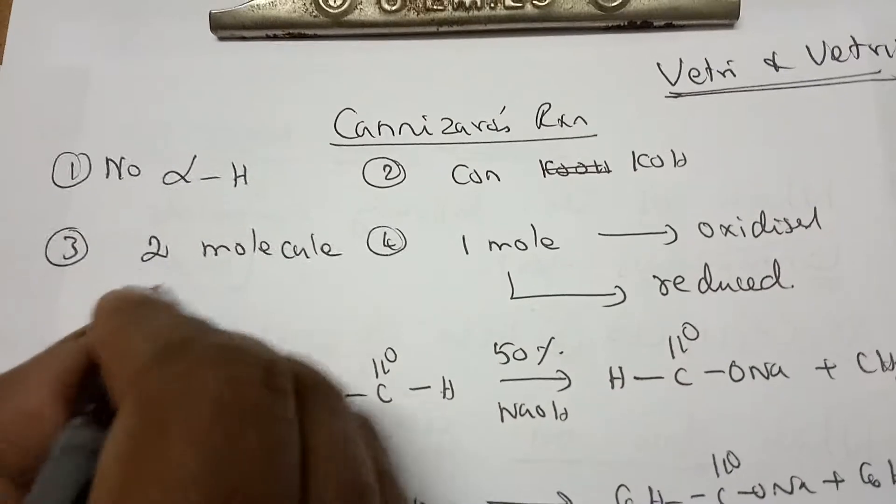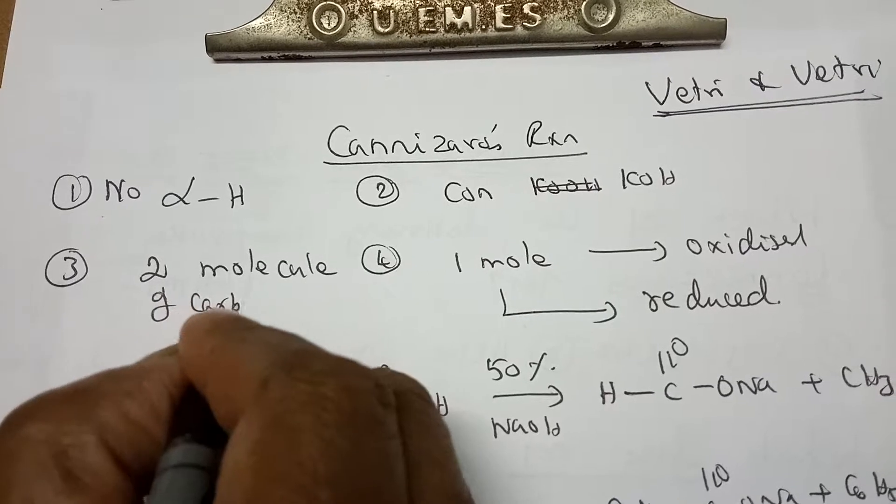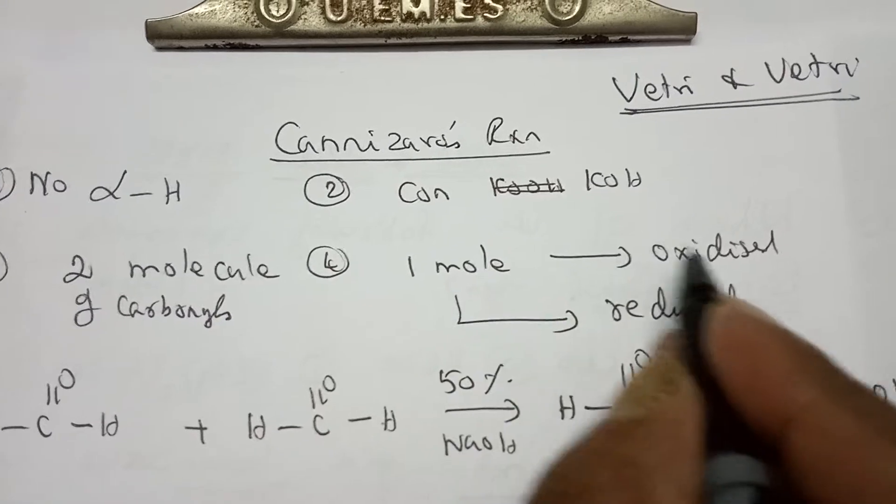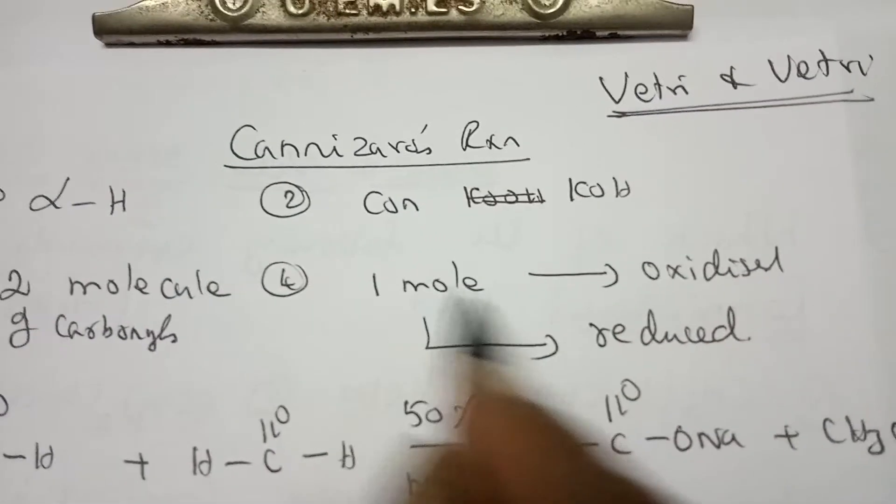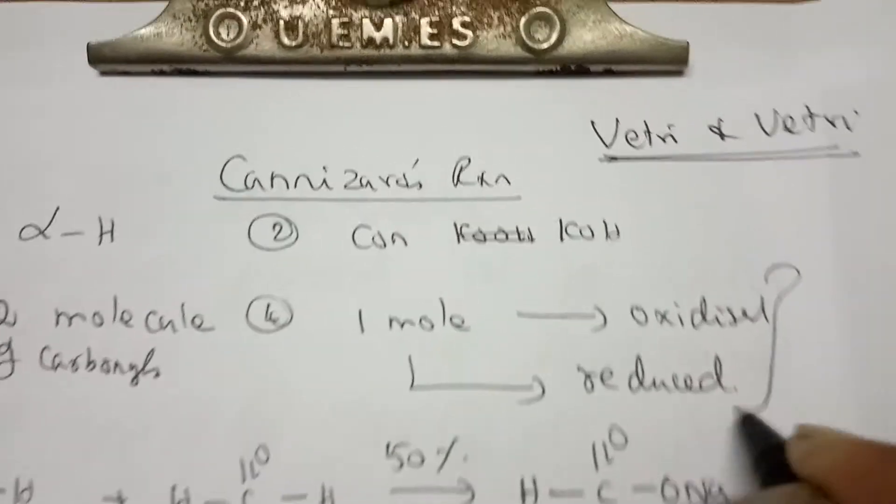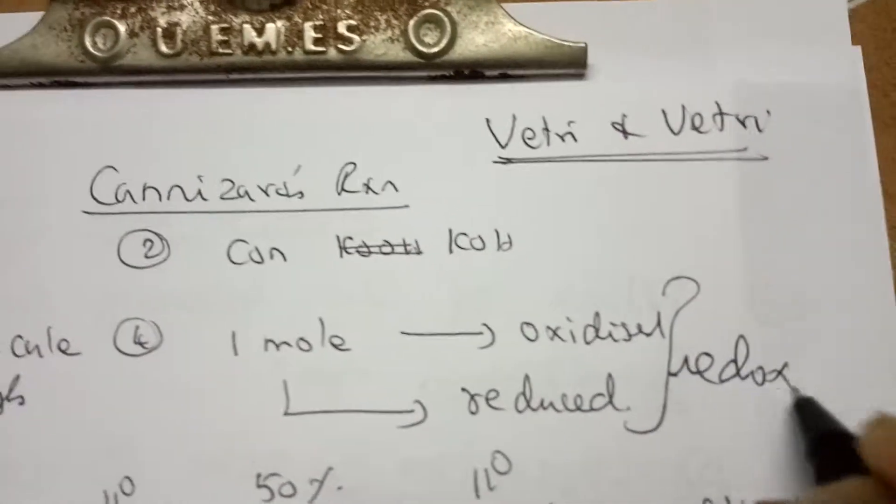Number three, two molecules of carbonyl compounds are required. And fourth point, among the one thing, one mole is oxidized and another mole is reduced. So we can say together it is called as a redox reaction.